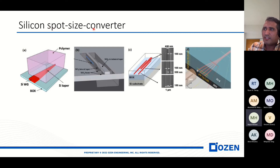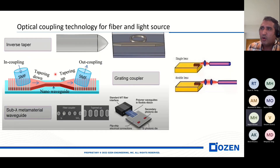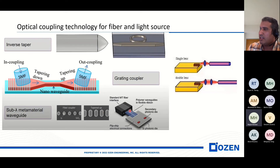We need a silicon spot size converter. In this picture, we want to couple the light from the fiber to the waveguide. There are different strategies for optical coupling technology. We have an edge coupler, a grating coupler, and a metamaterial waveguide. These are common methods to couple light into silicon photonic chips.